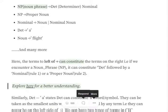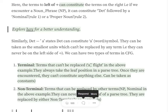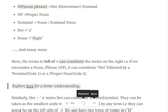So this is how CFGs are designed. In a CFG, we have majorly two types of terms. One is terminal terms, terms that can't be replaced. For example, in this case, 'a' and 'flight'.